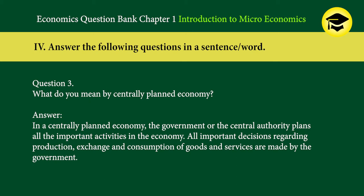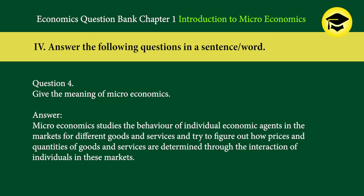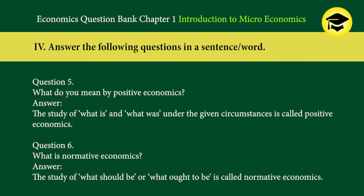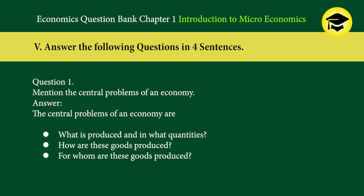Question 3: What do you mean by centrally planned economy? Answer: In a centrally planned economy, the government or the central authority plans all the important activities in the economy. All important decisions regarding production, exchange, and consumption of goods and services are made by the government. Question 4: Give the meaning of microeconomics. Answer: Microeconomics studies the behavior of individual economic agents in the markets for different goods and services and tries to figure out how prices and quantities of goods and services are determined through the interaction of individuals in these markets. Question 5: What do you mean by positive economics? Answer: The study of what is and what was under the given circumstances is called positive economics. Question 6: What is normative economics? Answer: The study of what should be or what ought to be is called normative economics.